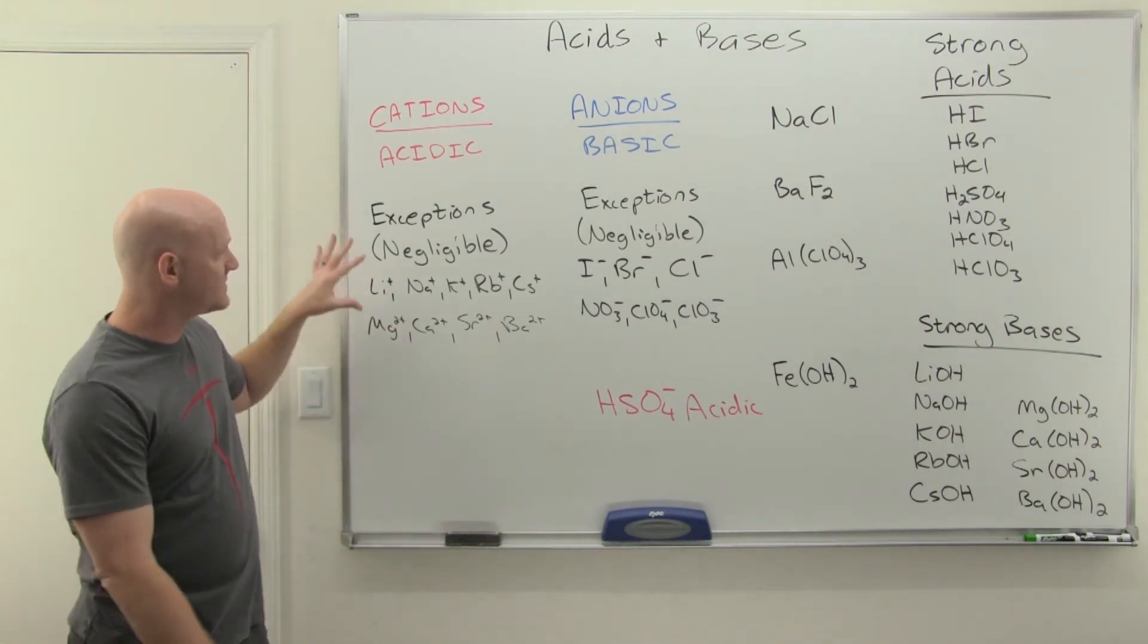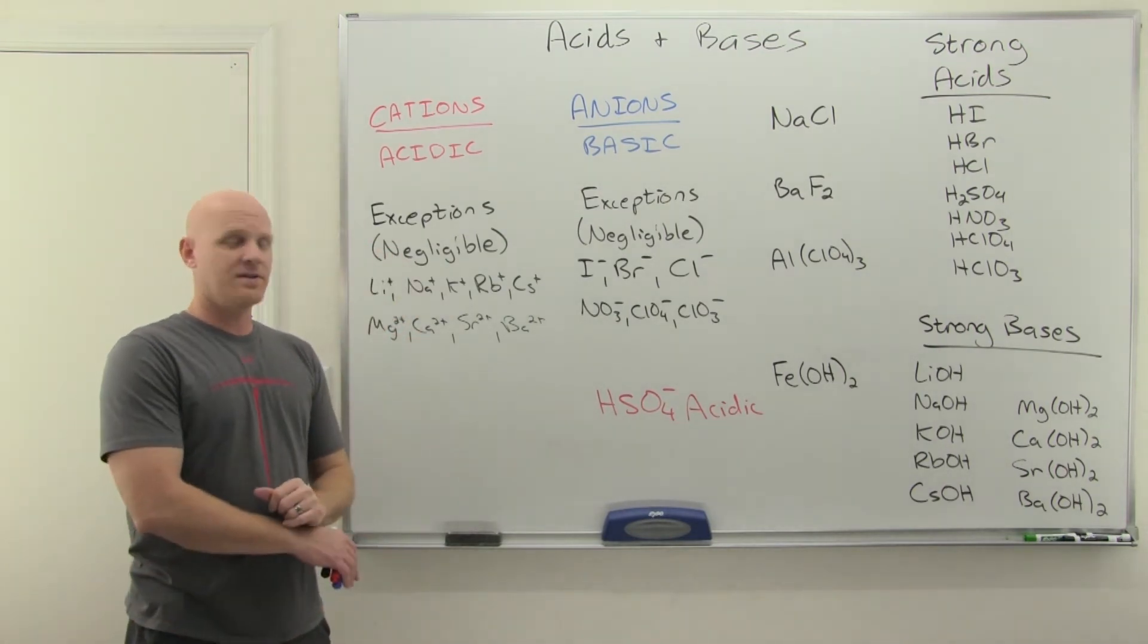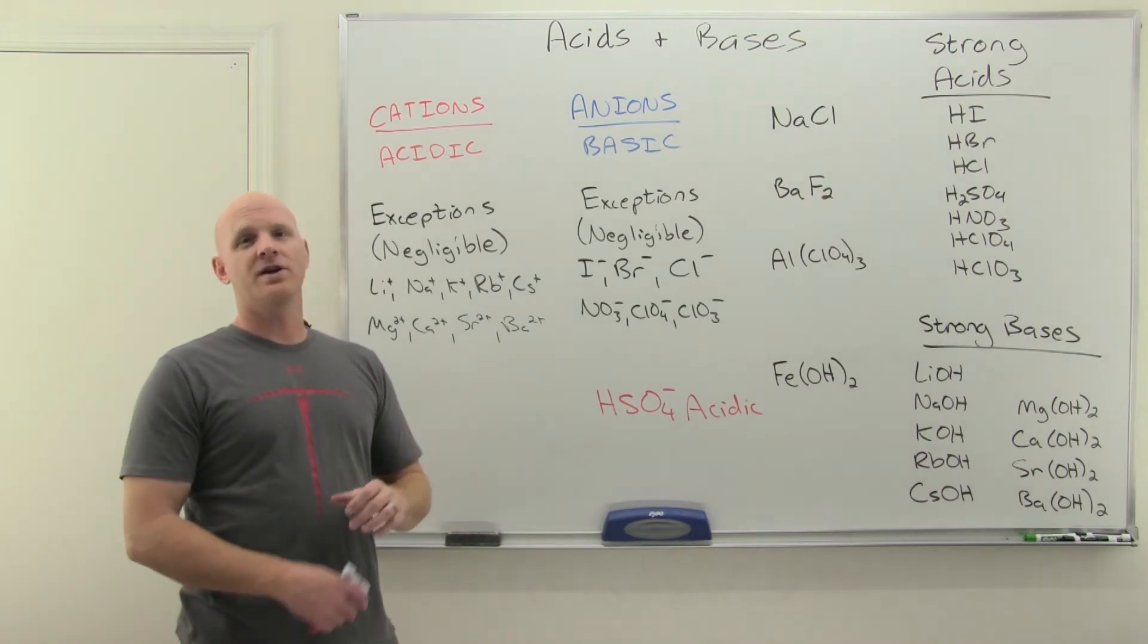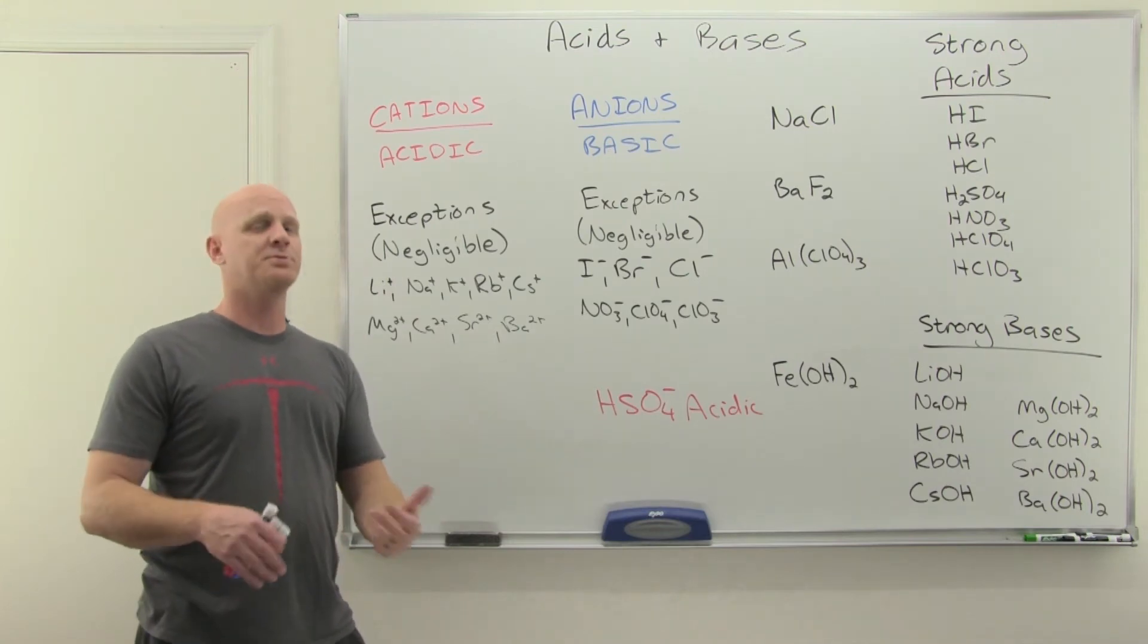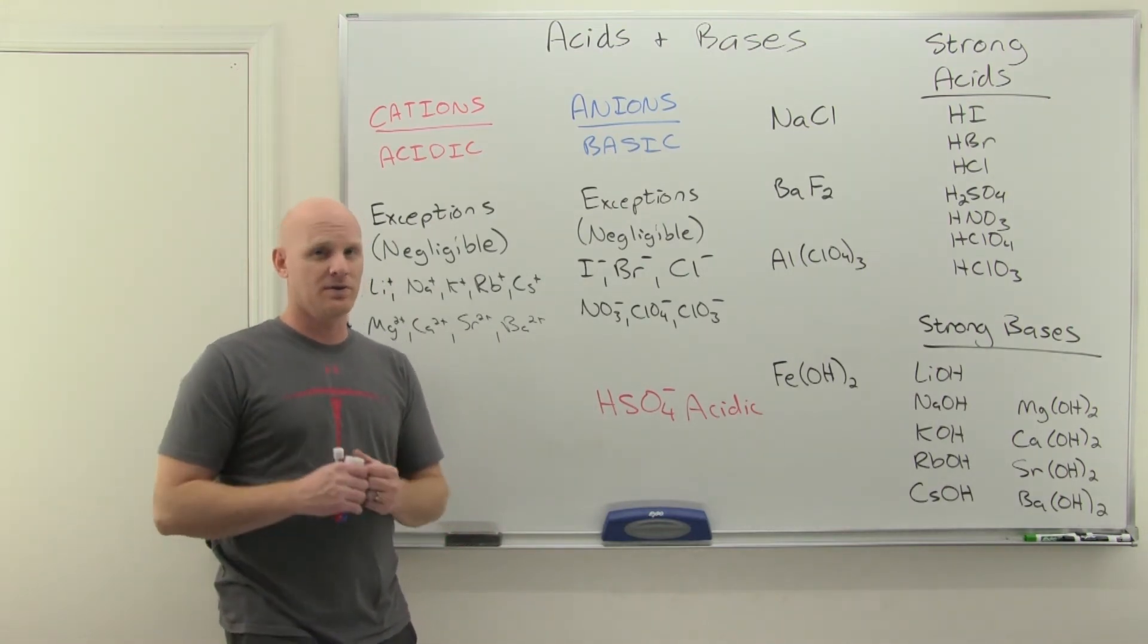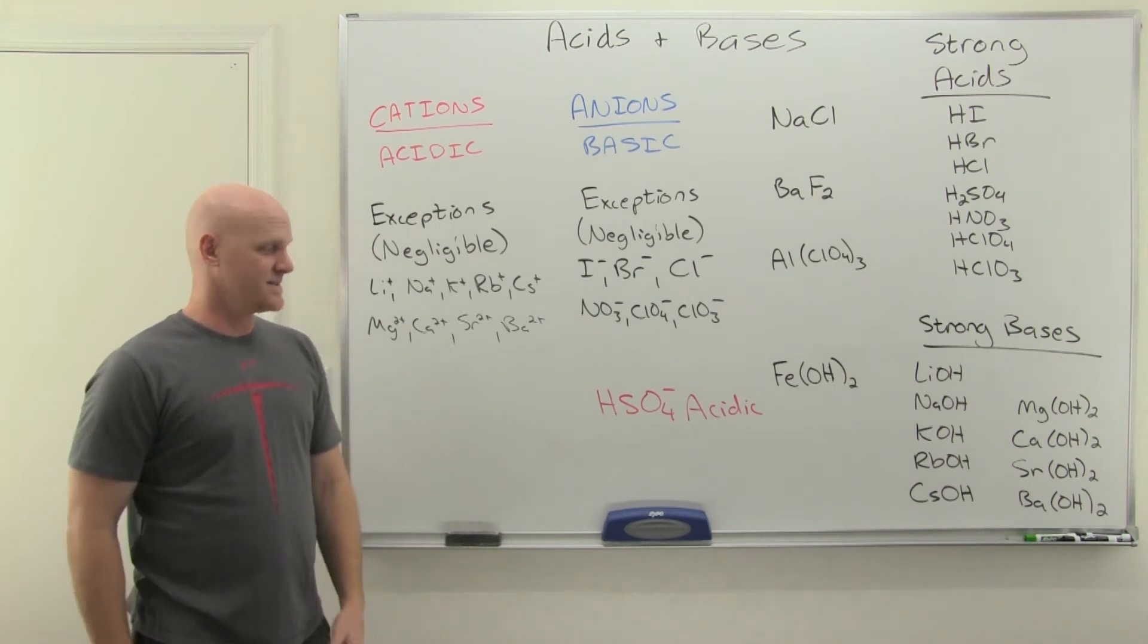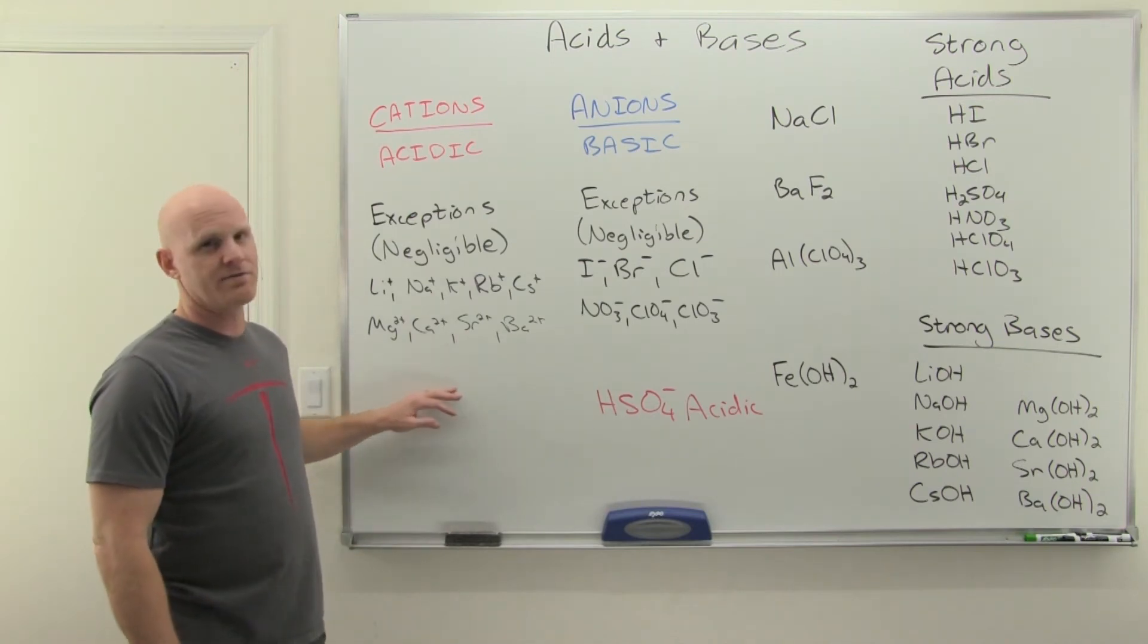It turns out it actually gets a little more complicated than this. If you wanted to get all the exceptions, a transition metal with only a plus one charge is negligible. One of the metals under the staircase on the right side with plus one or plus two is negligible. We're never going to teach you those. You might learn those in college. I put it in gray just to be on the safe side, but you're not on the hook for it.